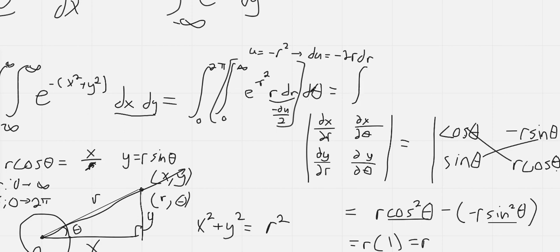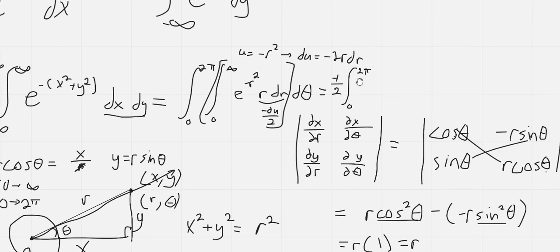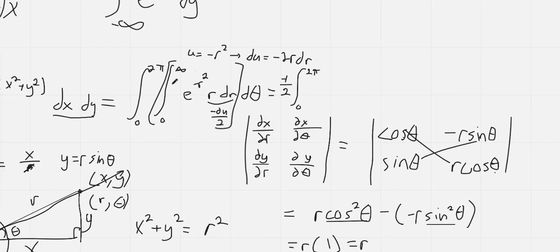And then we can factor out a negative 1 half through the entire integral so we still have our 0 to 2 pi on theta. And then if r is 0 then u is 0, and if r goes to infinity then u which is negative r squared goes to negative infinity.